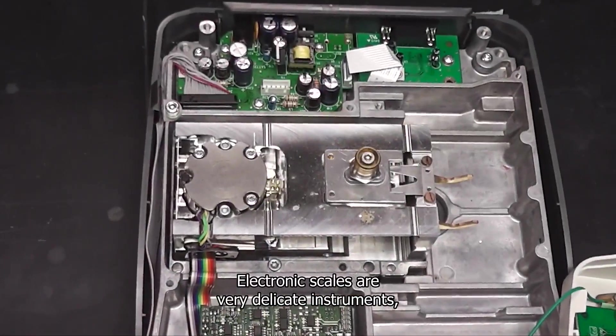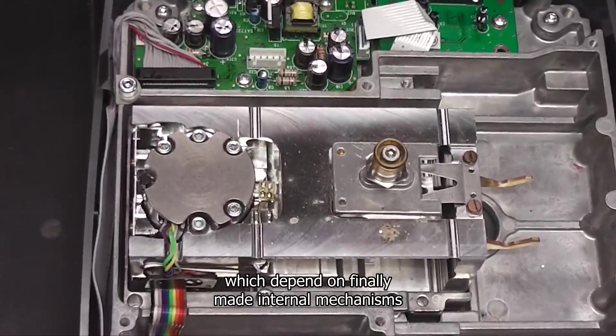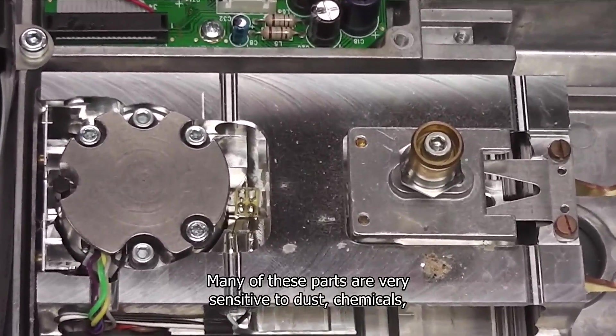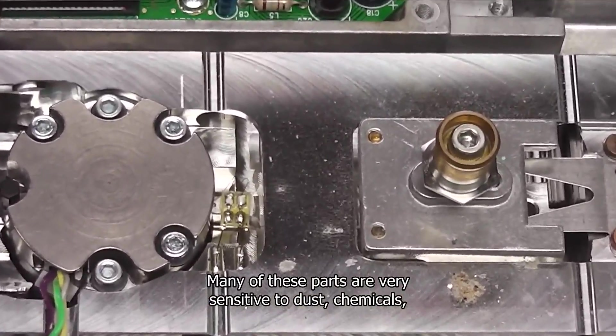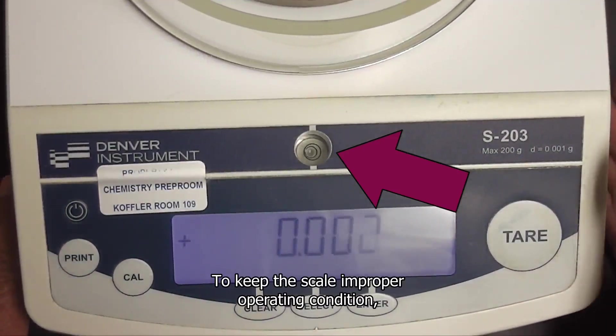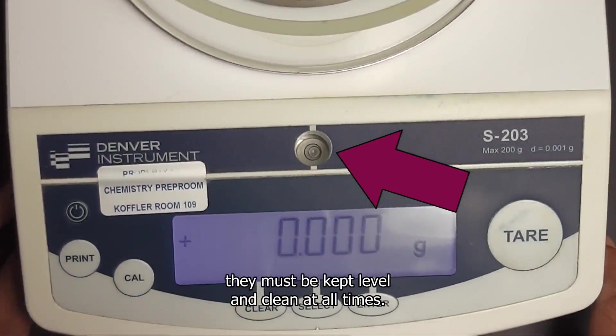Let's begin with going over some general information and a few basic do's and don'ts. Electronic scales are very delicate instruments which depend on finely made internal mechanisms to determine the weight of an item. Many of these parts are very sensitive to dust, chemicals, and vibration. To keep a scale in proper operating condition, they must be kept level and clean at all times.